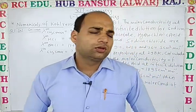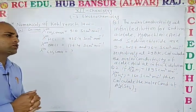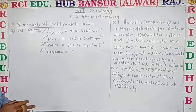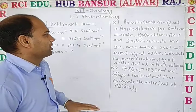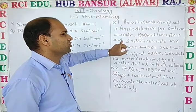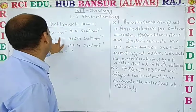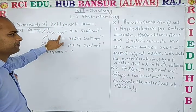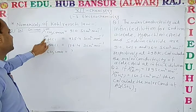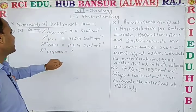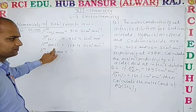Now, on the basis of Kohlrausch's law, we discuss two numericals. The first one: molar conductivity at infinite dilution for sodium acetate, hydrochloric acid, and sodium chloride are given — λ∞(CH₃COONa), λ∞(HCl), and λ∞(NaCl).